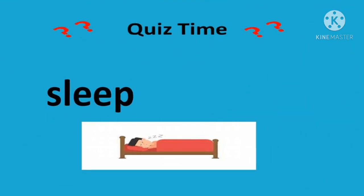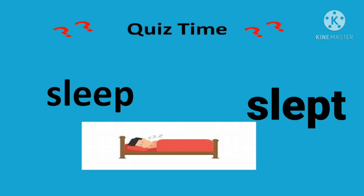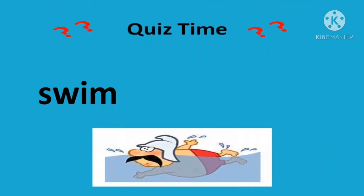The next verb is 'sleep' — s-l-e-e-p. It is also an irregular verb. The past verb of sleep will be 'slept' — s-l-e-p-t. Sleep becomes slept. The next word is 'swim' — s-w-i-m. It is also an irregular verb and the spelling of swim will be changed to 'swam' — s-w-a-m. Swim is the present verb and swam is the past verb.